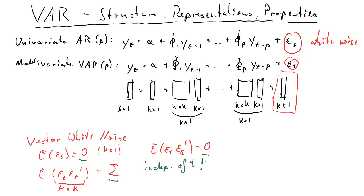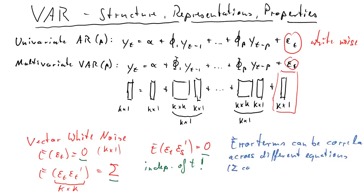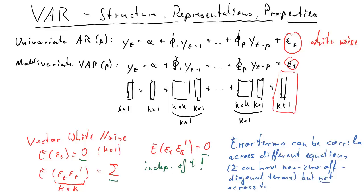All of these conditions — the zero mean, the sigma, and the zero cross-autocovariance — are independent of t and valid for all t. These are the characteristics of a vector white noise process. It's very important to understand that the error terms can indeed be correlated across different equations, so sigma can have non-zero off-diagonal terms, but the error terms should not be correlated across time — that's why we have that zero for the cross-autocovariances.